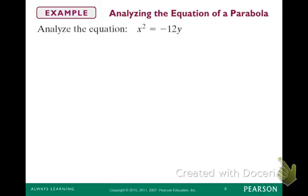So x squared equals negative 12y. We're going to analyze this, find our information, and graph it. So first of all, what kind of parabola will this be? It is vertical, and it is opening what? If it's vertical, it is opening down.